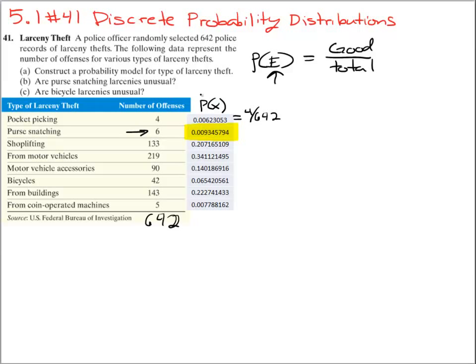What is our definition for unusual? What does it mean to be unusual? Well, the book defines unusual as any time the probability is less than 0.05 or 5%. So is this less than 5%? Yes. So this would be a yes.